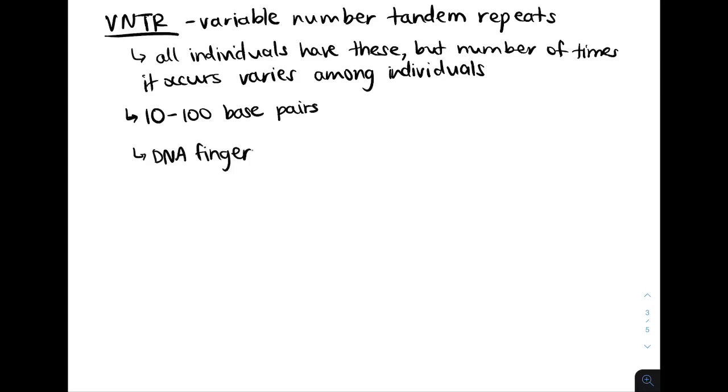So in DNA fingerprinting, we're going to get DNA from multiple suspects at a crime scene, and we will then amplify the segment of DNA that we know all those suspects would have, which is the VNTR segments.